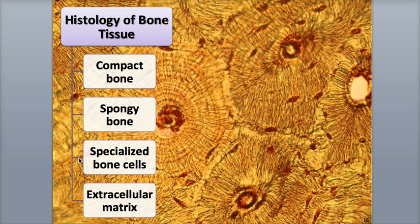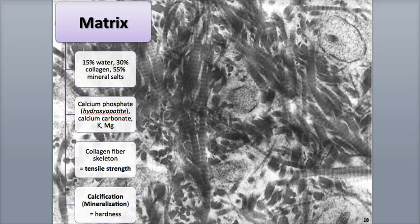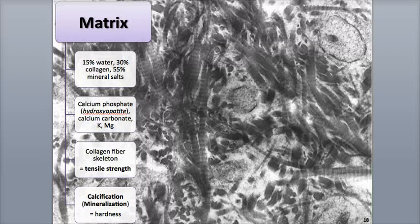We'll examine the different types of specialized bone cells and the composition of bone's extracellular matrix. Bone tissue is a type of connective tissue, and like all connective tissues, it contains extracellular matrix, which is a substance that surrounds and separates the various cells that make up the bone tissue. The composition of the matrix is 15% water, 30% collagen protein fibers, and 55% crystallized mineral salts, such as calcium phosphate.